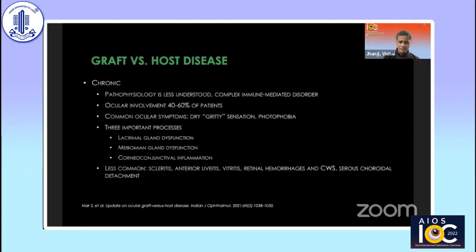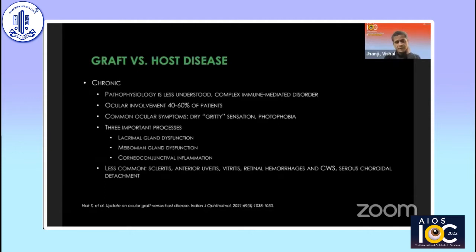Corneal and conjunctival inflammation is another hallmark of the disease. The dry eye in GVHD is quite distinct and different from the usual dry eye that we see. Less commonly in chronic GVHD, we see patients with scleritis, uveitis, vitritis, retinal hemorrhages, cotton wool spots, and also choroidal detachment. It is very important to examine the disc and macula in these patients at every single follow-up. All our patients are dilated when they come to clinic, if they can sit upright.